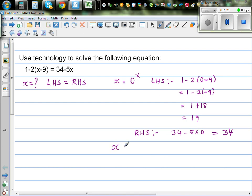So let's say x is equal to negative 1. If x is negative 1, what would you do? The same process. Your left hand side would be 1, take away 2 times negative 1, take away 9, which is 1 minus 2 times negative 10. This is 1 plus 20, which is 21.